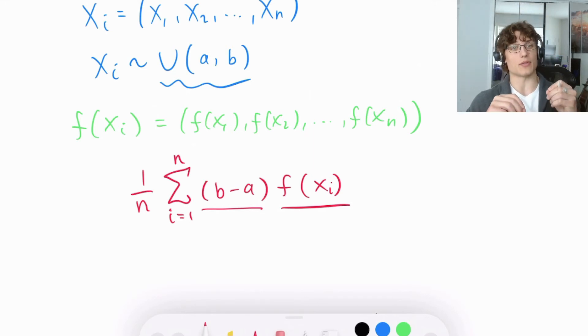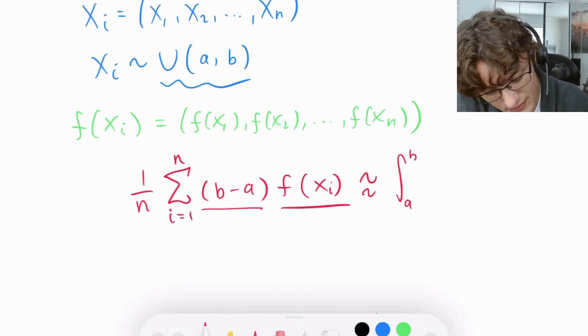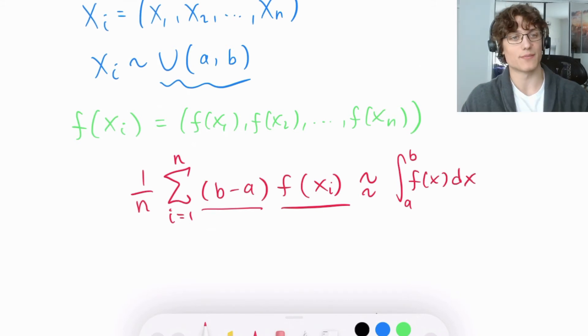What's really cool about the average value of each of the rectangles that we generated above is it is approximately equal to the definite integral from a to b of f(x)dx. Let's head on over to Python and see this in action.